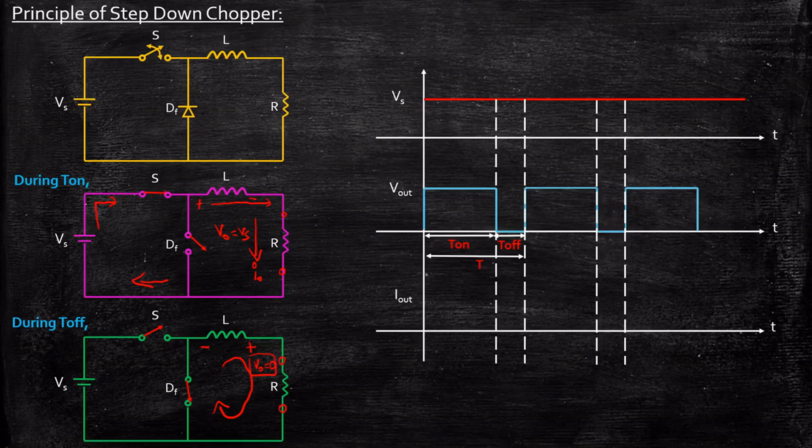Now, what is the current waveform? We were discussing that during turn-on, the current was increasing because the inductor slowly starts to charge. As a result, during Ton, it is increasing and during Toff, the current that was stored in the inductor will be dissipated through the resistor R. As a result, it is decreasing in nature in this particular fashion. That's why you are getting a waveform of this nature.